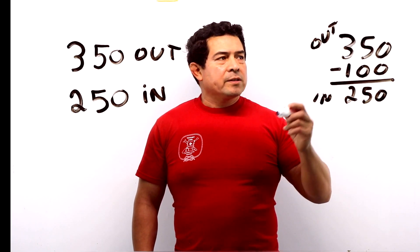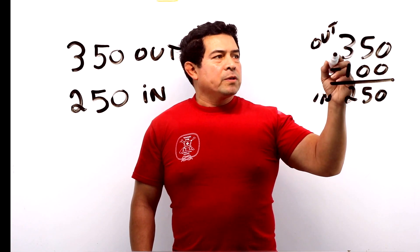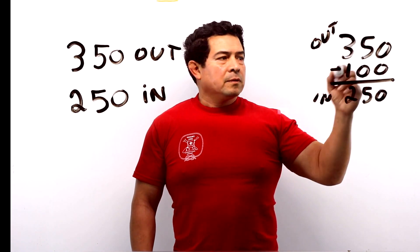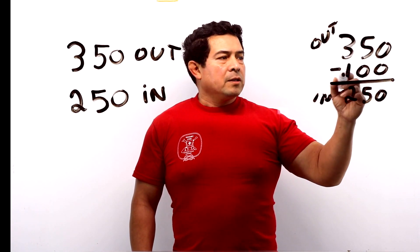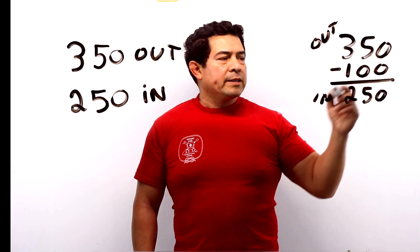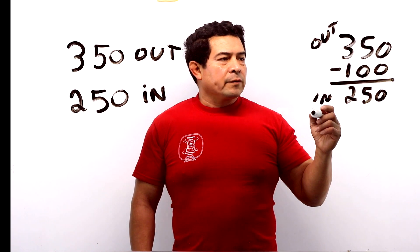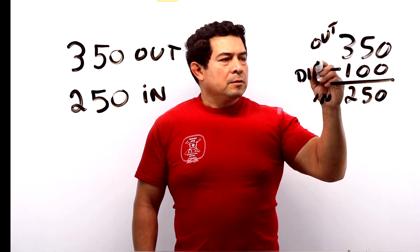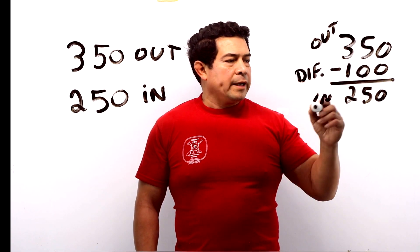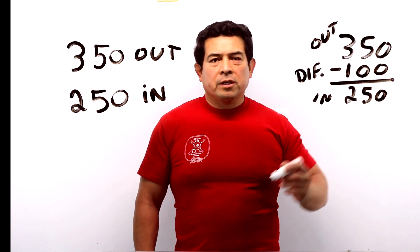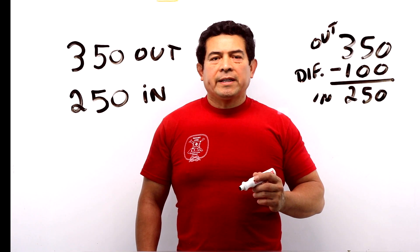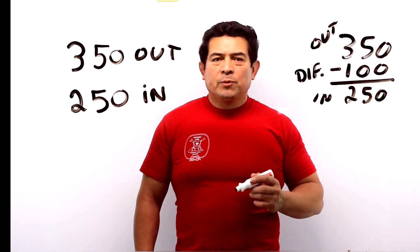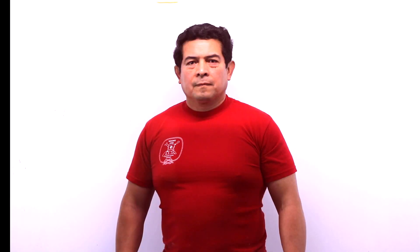By looking at this, all you do is set the cut out, then you set the differential and that will tell you what the cut in is. That's how you would set your high pressure switch.